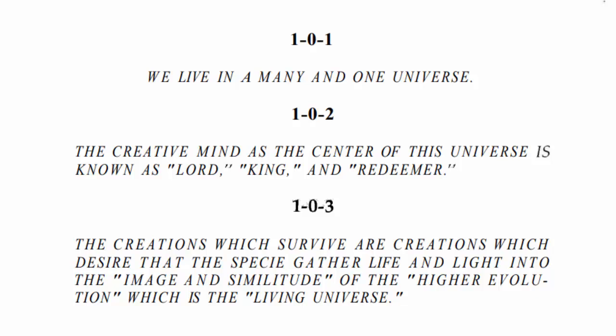In this one we're going to start down here in verse 6. What we're looking at is how we live in a many-and-one universe — that's key number one. Key number two says the creative mind as the center of this universe is known as Lord, King, or Redeemer. Key number three is the creations which survive are those which desire that the species gather life and light into the image and similitude of the higher evolution, which is the living universe.